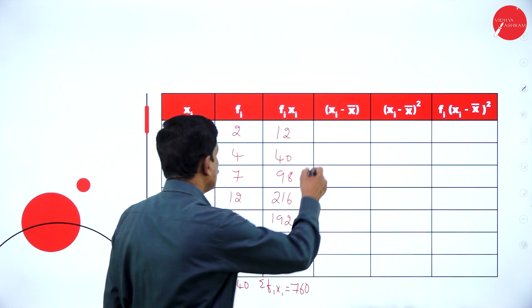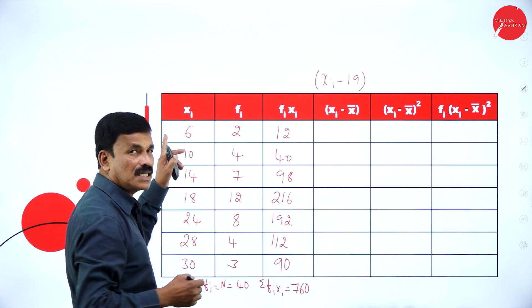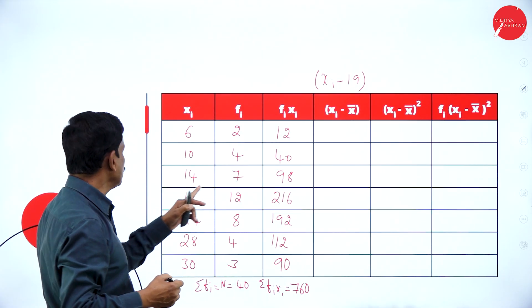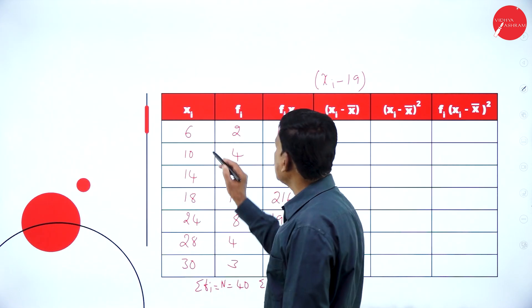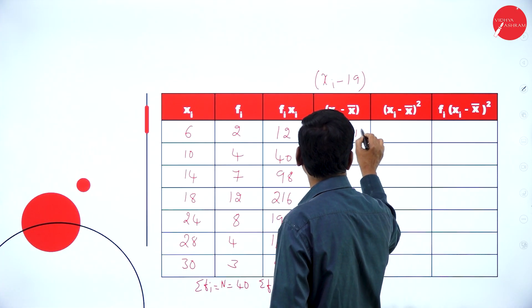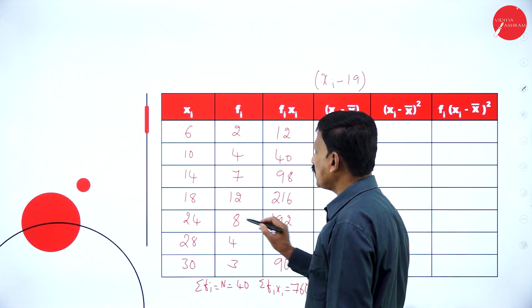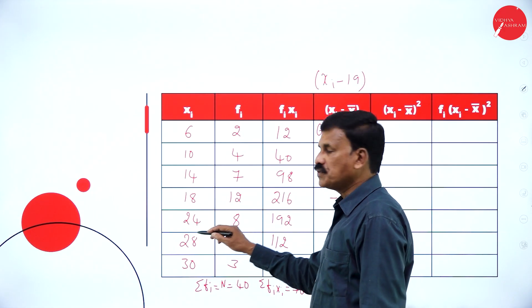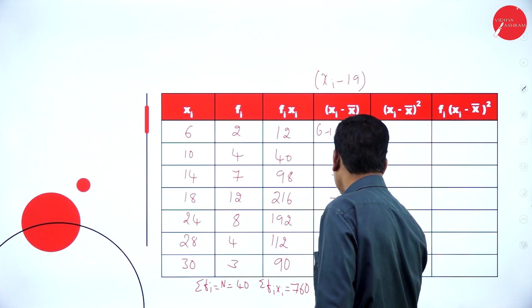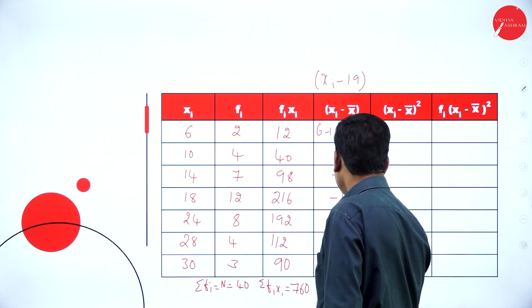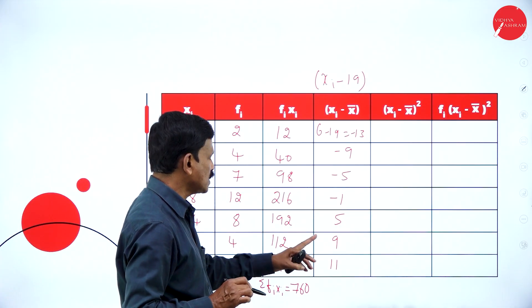Now find out the value of xi minus x-bar. x-bar is 19, so just subtract 19 from each xi. 6 minus 19 is minus 13, 10 minus 19 is minus 9, 14 minus 19 is minus 5, 18 minus 19 is minus 1, 24 minus 19 is plus 5, 28 minus 19 is plus 9, and 30 minus 19 is plus 11.